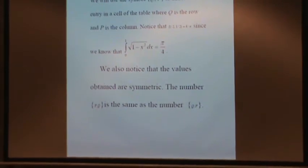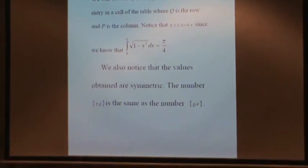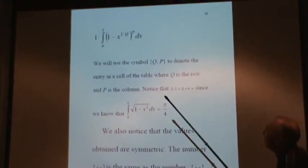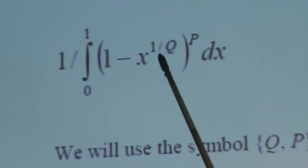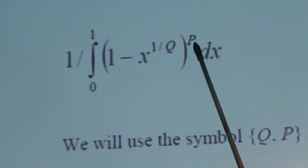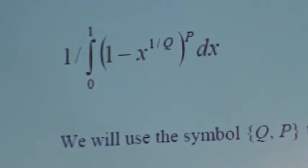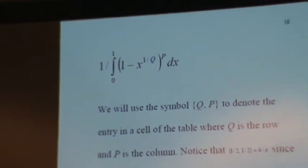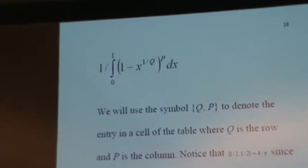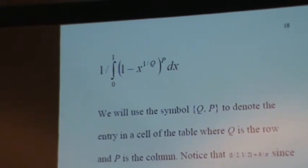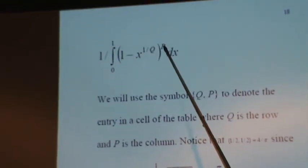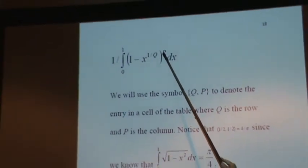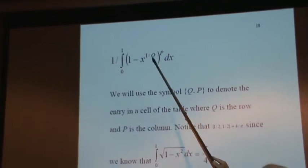The strategy will be that he will study integrals of this type: one minus x to the one over q all raised to the power of p. Now, the one he wants to do has the power of p equal to a half which he can't do. But he can do it with natural number p. That he can do at any q.